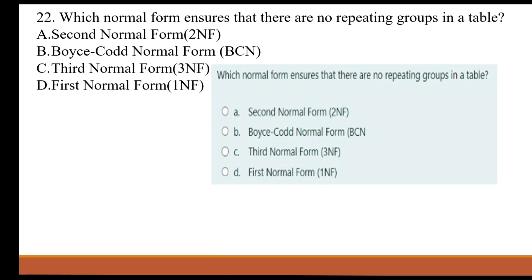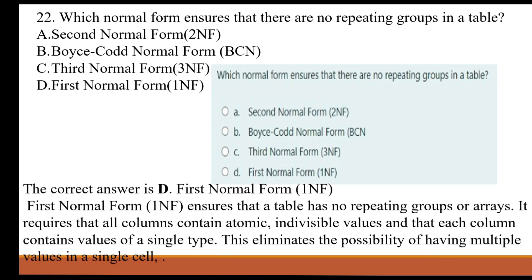The correct answer is D, First Normal Form. First Normal Form ensures that a table has no repeating groups or arrays. It requires that all columns contain atomic, indivisible values and that each column contains values of a single type.